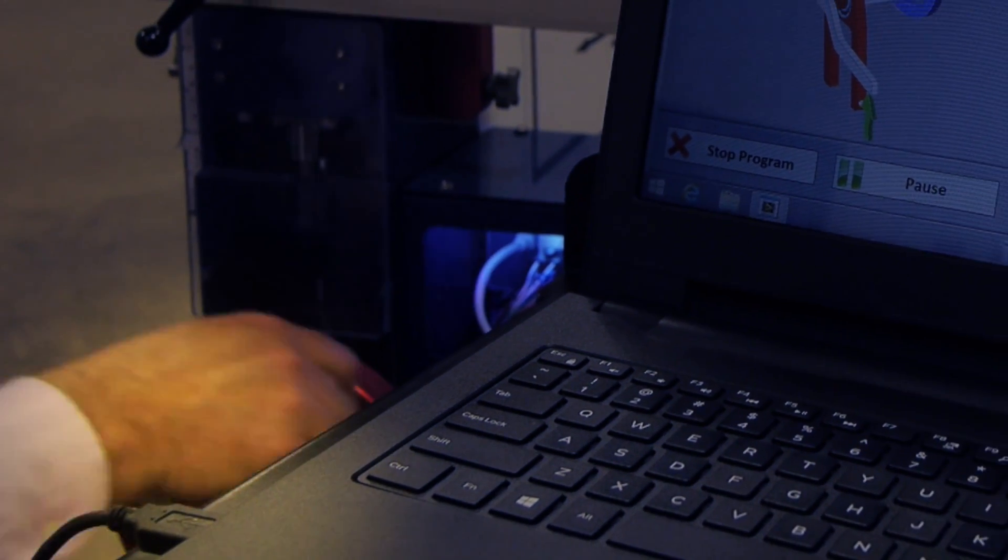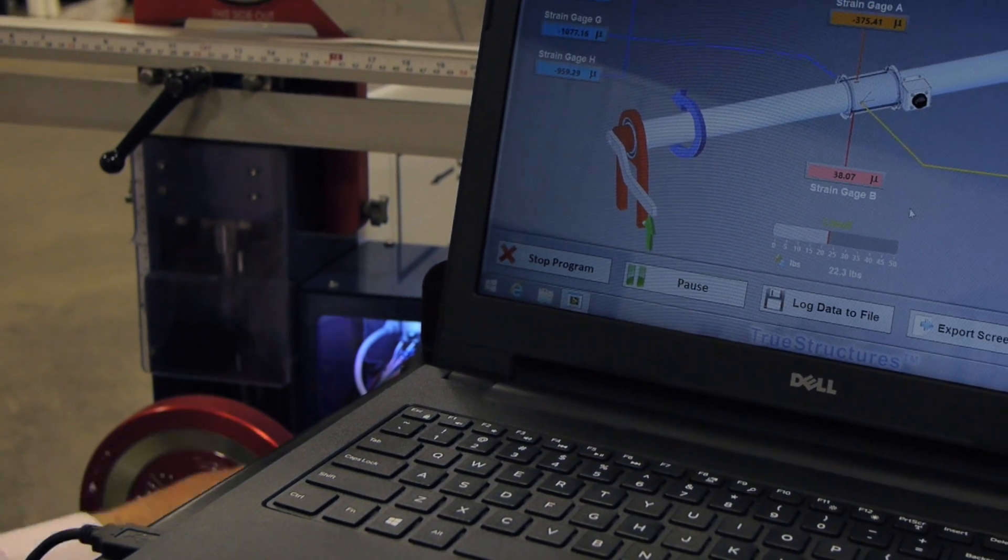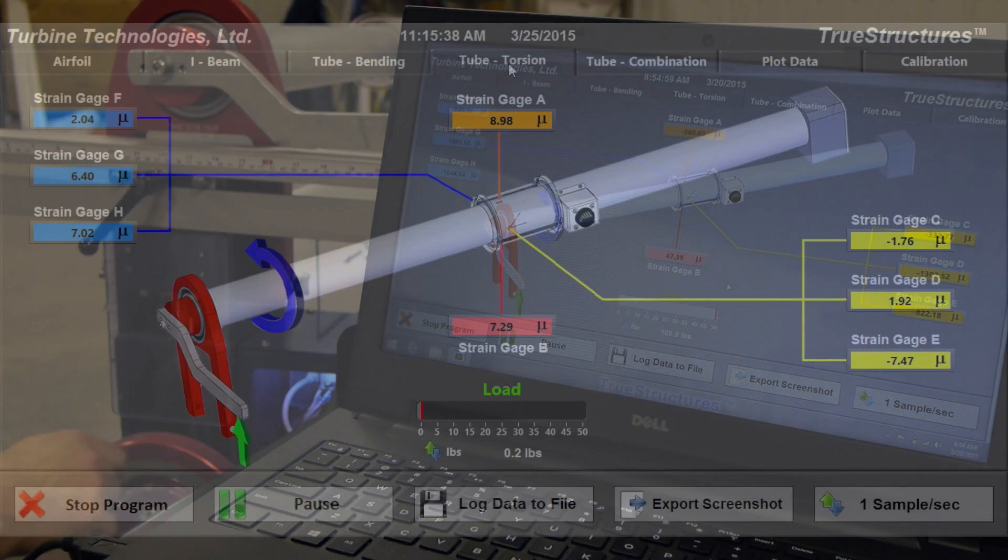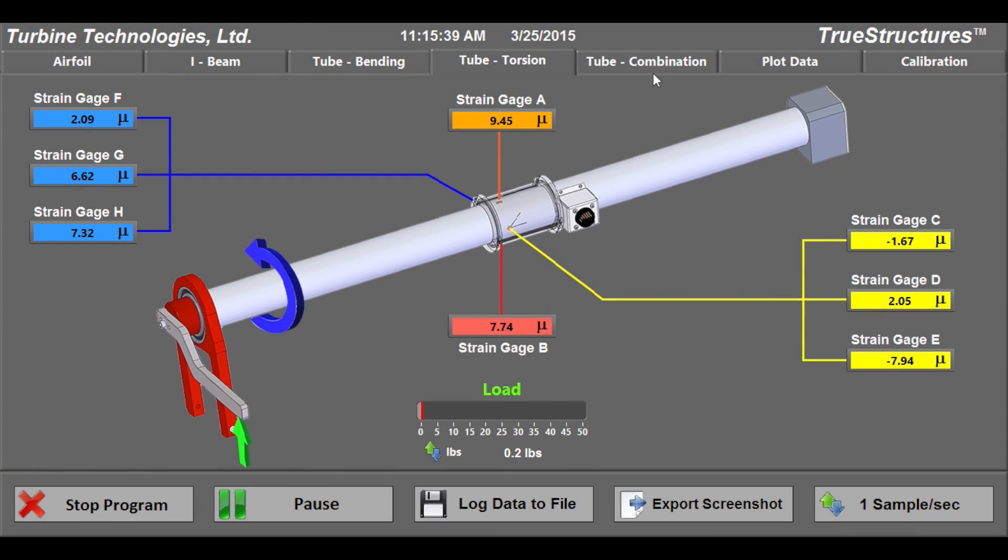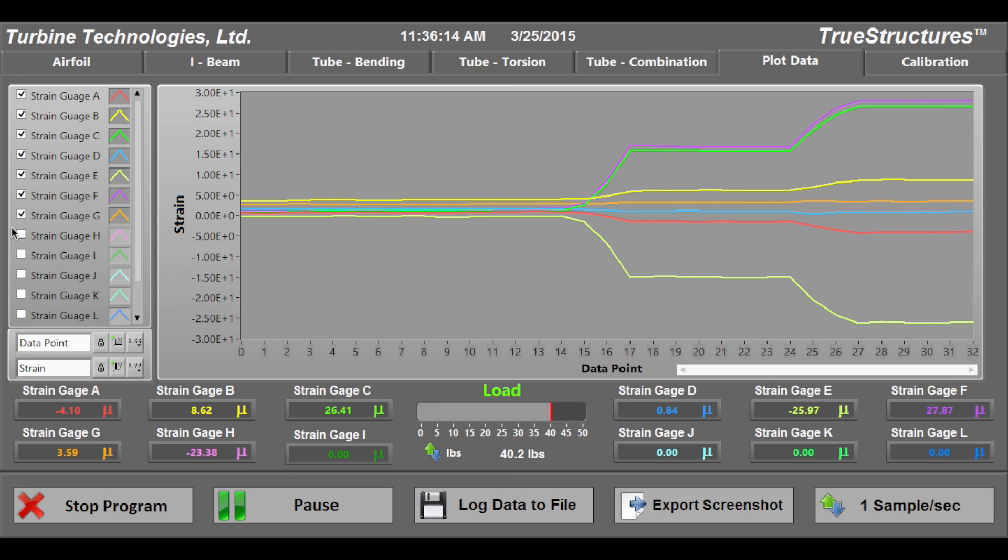Strain gauge measurement data is sent via USB connection to a LabView-generated virtual instrument panel on the provided laptop computer. The system displays real-time data, both numerically and graphically, which can also be recorded for future analysis.